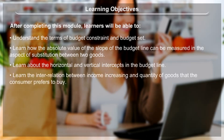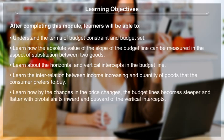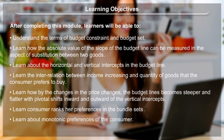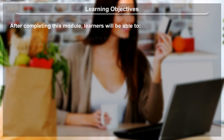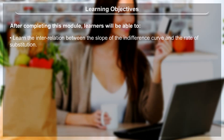Learn about the horizontal and vertical intercepts in the budget line. Learn the interrelation between income increasing and quantity of the goods that the consumer prefers to buy. Learn how changes in price cause the budget lines to become steeper and flatter with pivotal shifts inward and outward of the vertical intercepts. Learn how the consumer ranks her preferences in the bundle sets.